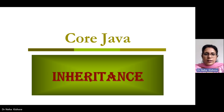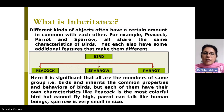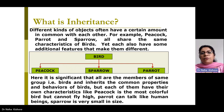So, inheritance — what exactly is inheritance? Let's take an example. When we have different kinds of objects, often they have certain things in common with each other. For example, Peacock, Parrot, and Sparrow all share the same characteristics of birds. They also have some additional features which make them different.